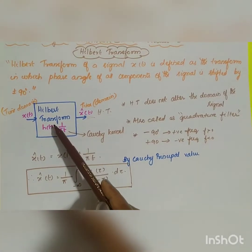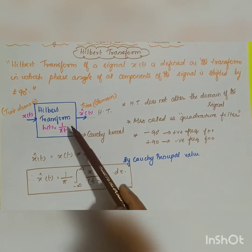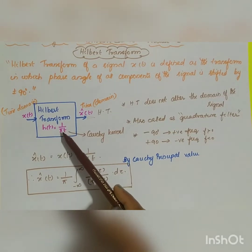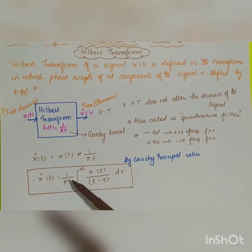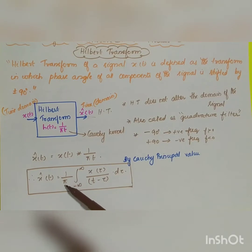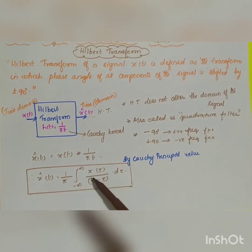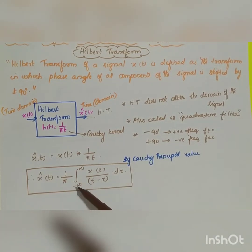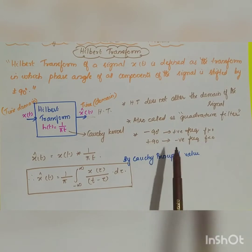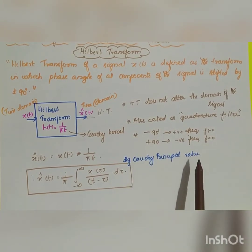This h(t) equal to 1/πt — the impulse response — is called the Cauchy kernel. And x̂(t) can be written as 1/π times the integral from minus infinity to infinity of x(τ) divided by (t − τ) dτ. Note that this integration is interpreted as a Cauchy principal value, not an ordinary integral.